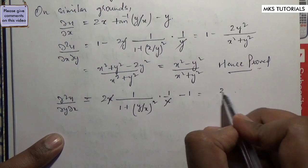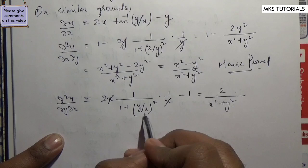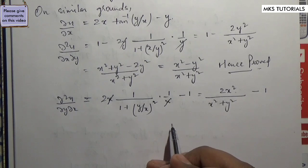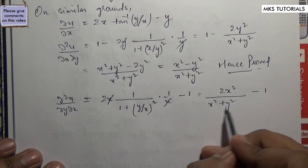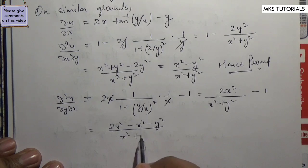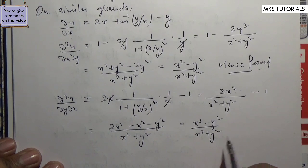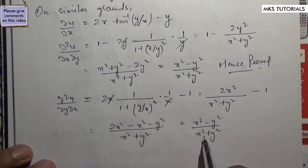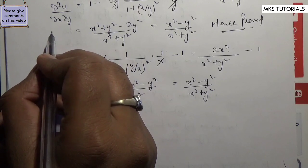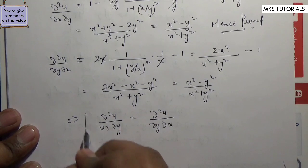You can cancel this one. This will become x². Now we will see: if y² goes to x, then opening it out gives minus x² minus y² upon x² plus y². This will give x² minus y² upon x² plus y². This means ∂²u/∂x∂y is equal to ∂²u/∂y∂x.